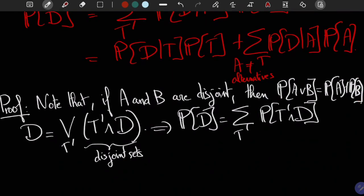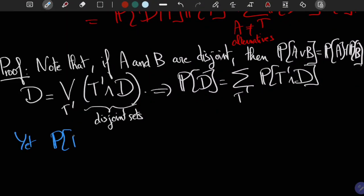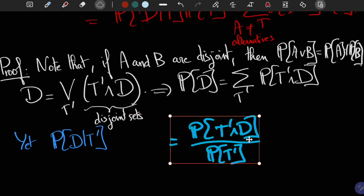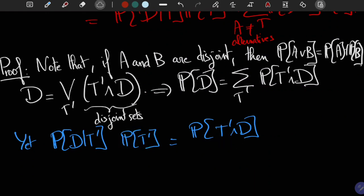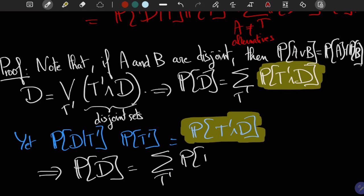And finally, we can conclude using the definition of conditional probabilities, which says that the probability of D given T prime is equal to the probability of D and T prime divided by the probability of T prime. And by multiplying by probability of T prime on both sides, putting this in our previous equation yields the lemma. And thus, the lemma holds.